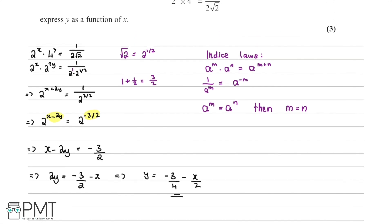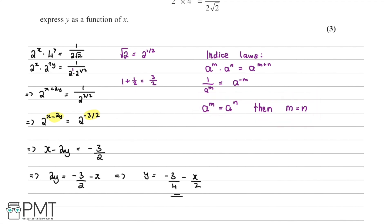Taking a look back, this question was worth 3 marks. We received our first mark for using the first index law — combining two terms into one by adding the exponents. We received our second mark for using the law that if a^m equals a^n then m equals n, going from the exponent equation to the simplified form. We received our third and final mark for rearranging down to the final answer.